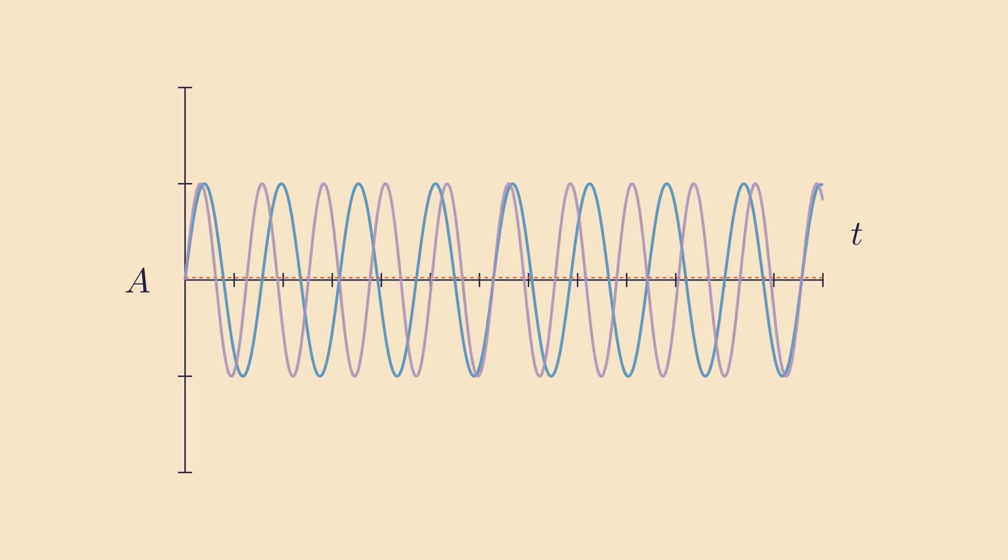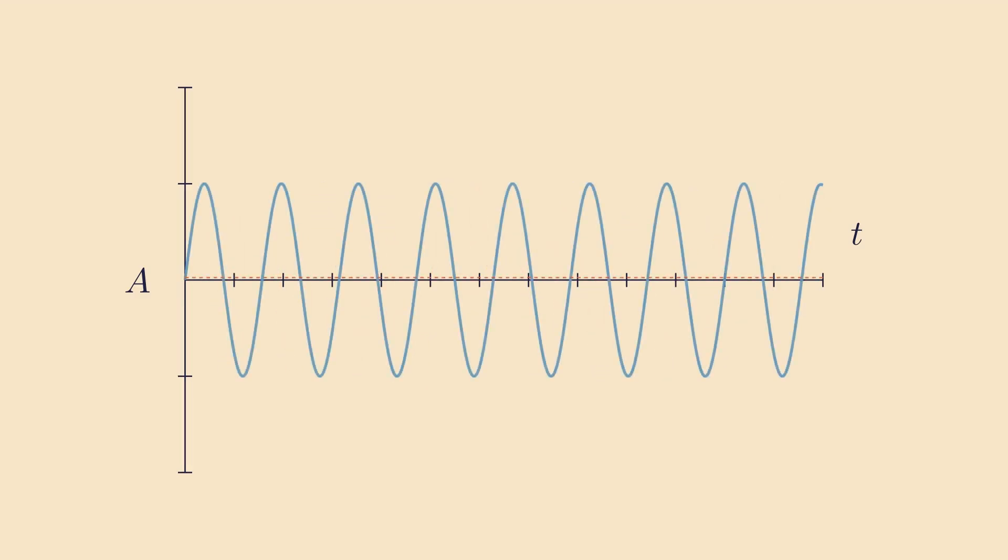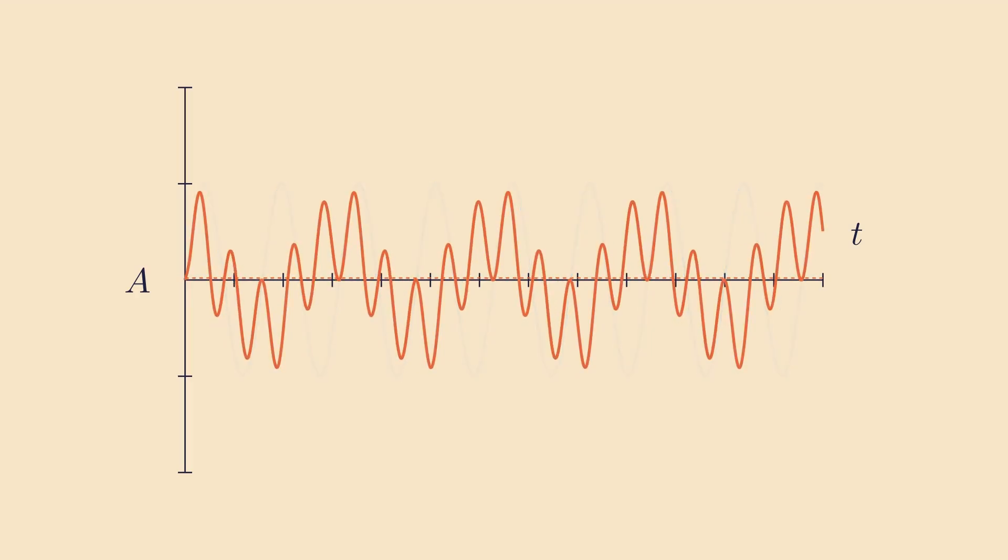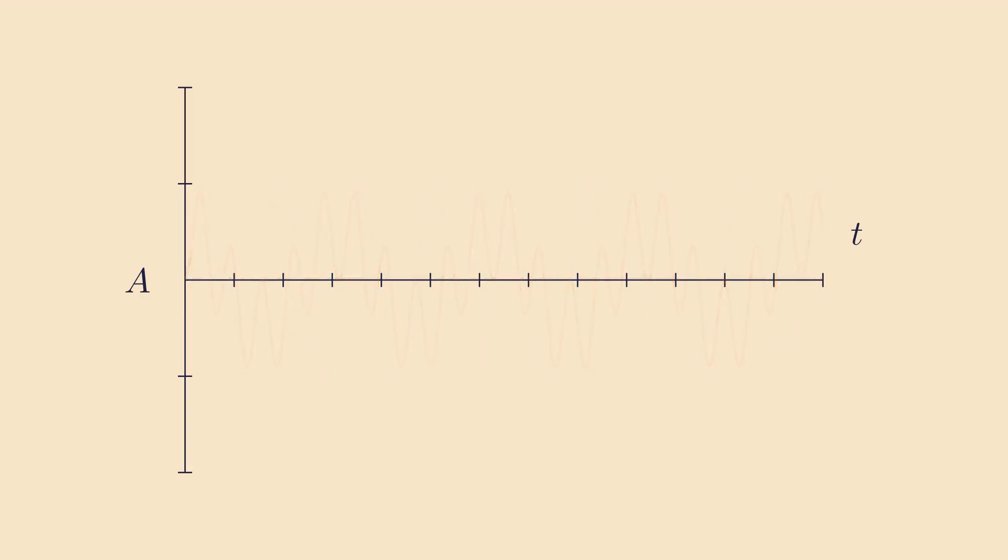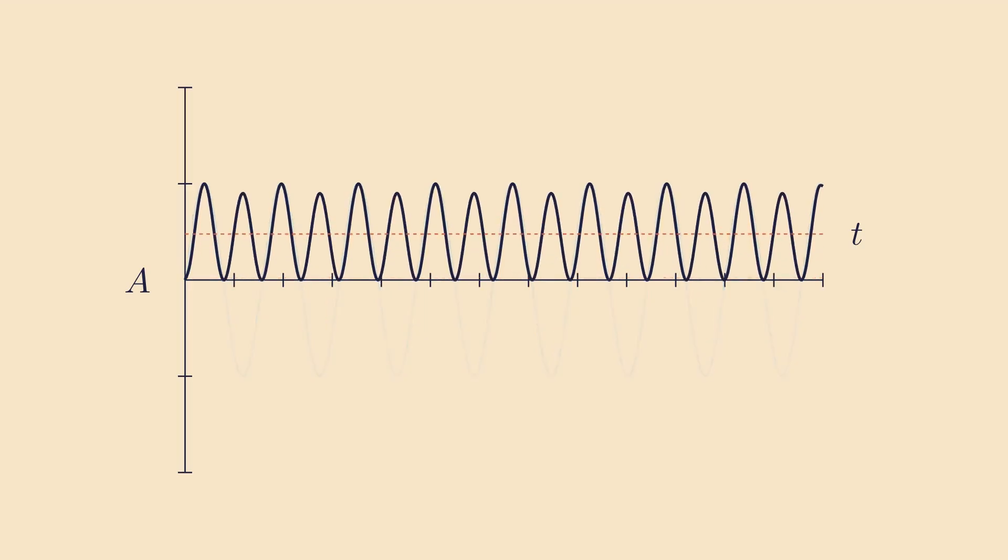Notice how the red line remains generally close to the axis, except when we multiply by a sine wave of a very specific frequency. That's because when the audio contains the frequency we multiply it by, then it has the effect of squaring the signal. And since squares are always positive, the average rises above the axis.